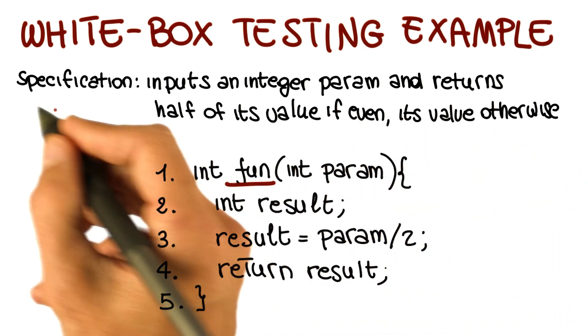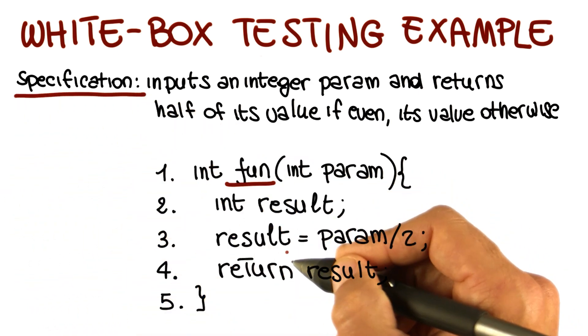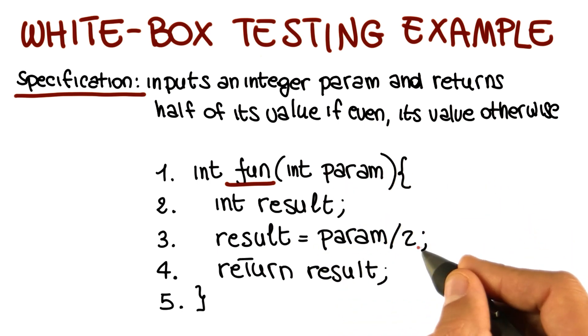So looking at this specification, we can clearly see that the function fun works correctly only for even integers, and it doesn't work for odd integers, because it computes half of the value of the parameter and returns it every time, no matter what param is.